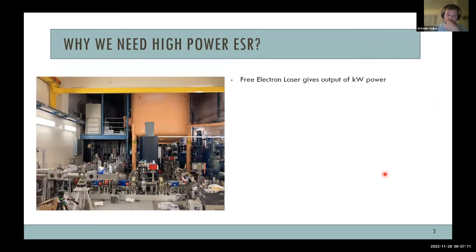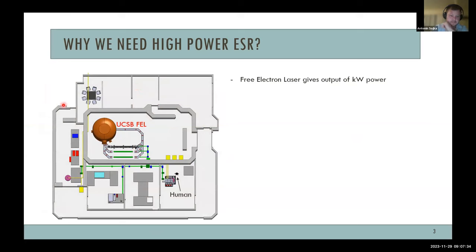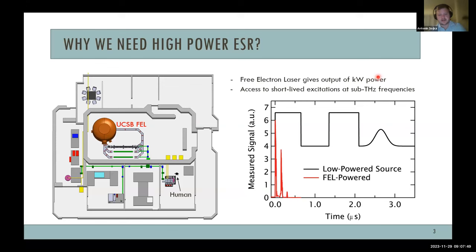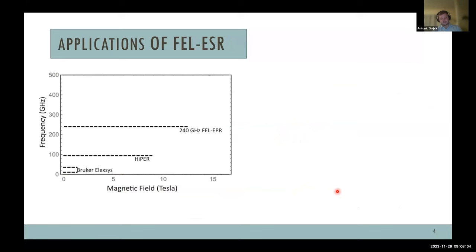Why do we need a high-power continuous-wave EPR spectrometer and why use a free electron laser? The FEL is huge — this is a picture of the inside of our world-class facility. Its big advantage is that it gives us kilowatts of power over a broad frequency range. This gives us access to short-lived excitation at higher frequencies. Compared to low-power sources, where you need a long pulse length for spin echo detection, high power allows access to faster relaxation.